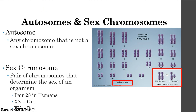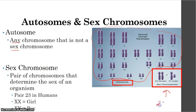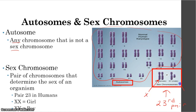Autosomes are any chromosome that is not a sex chromosome — all of those pairs except the 23rd. Sex chromosomes are very simple: they are the 23rd pair of chromosomes, the ones that determine your gender. The longer chromosomes of the 23rd pair are called the X chromosomes, and the really short one is called the Y chromosome. If you have two X's, you are a girl. If you have an X and a Y, you are a boy.